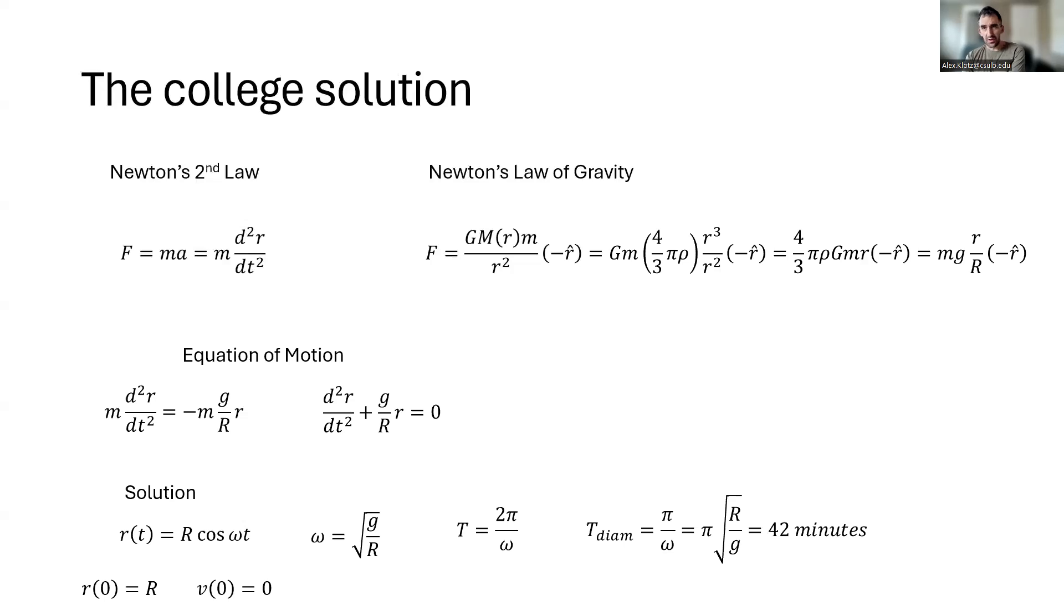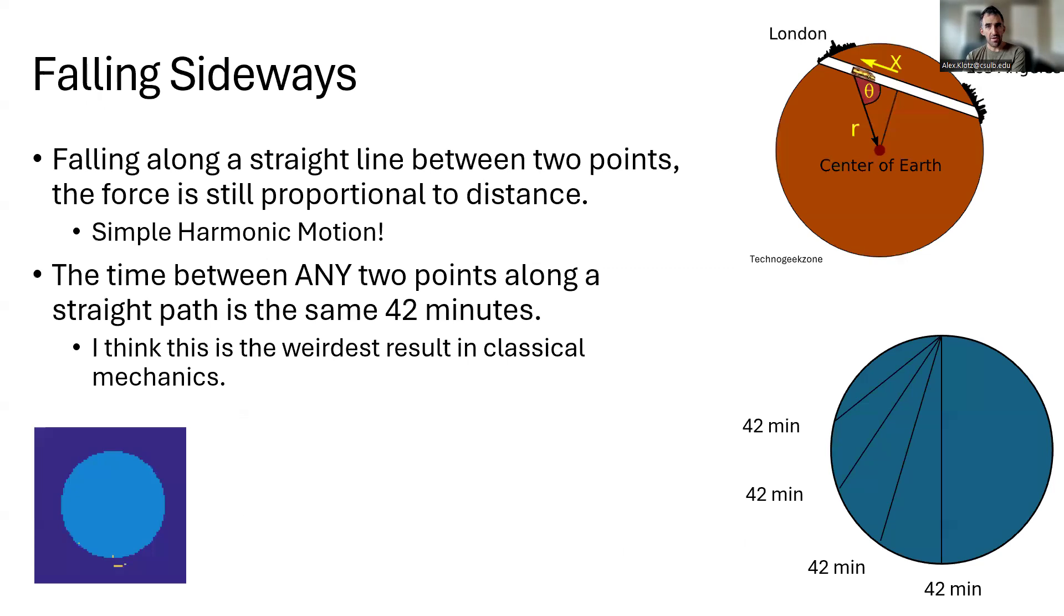Now, these tubes don't just have to go straight down to the other side. If you take any two points and connect them with a straight tunnel, you can show that the force along this tunnel is proportional to the position from the center, which again gives simple harmonic motion with the same angular frequency or a half period of 42 minutes. It means you can connect any two points, whether it's Los Angeles to Australia or Los Angeles to New York, and it would take the same 42 minutes to fall through. And I think that's one of the weirdest results in classical mechanics.